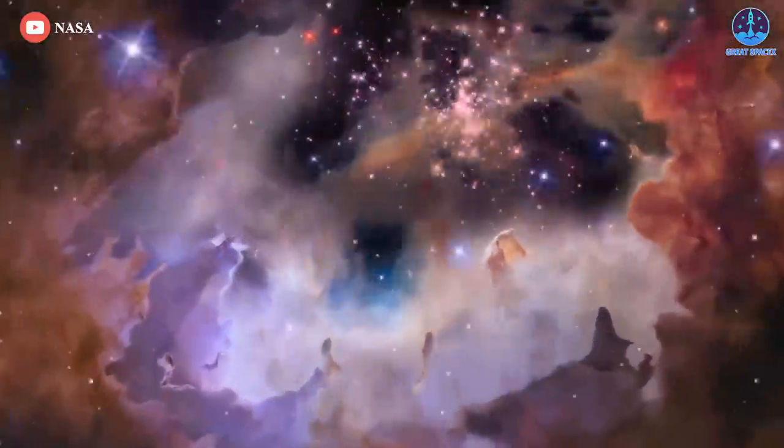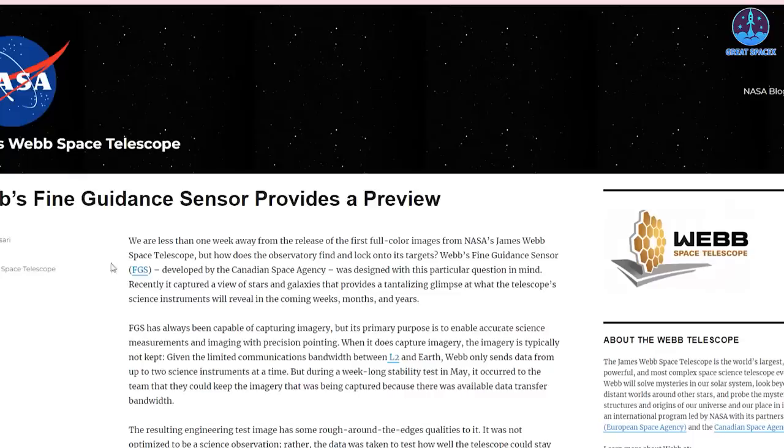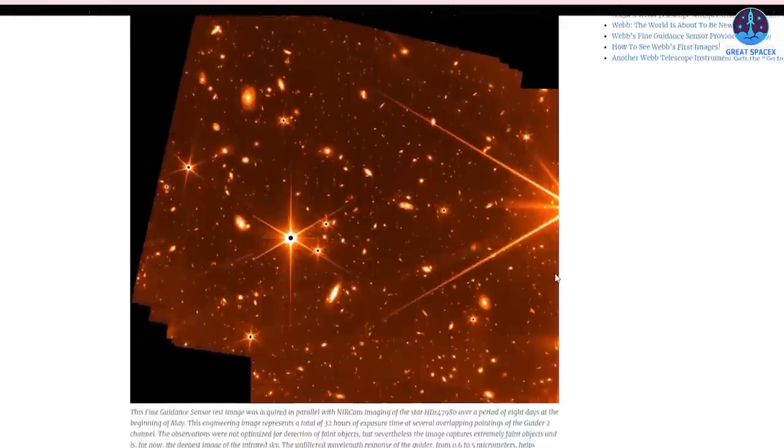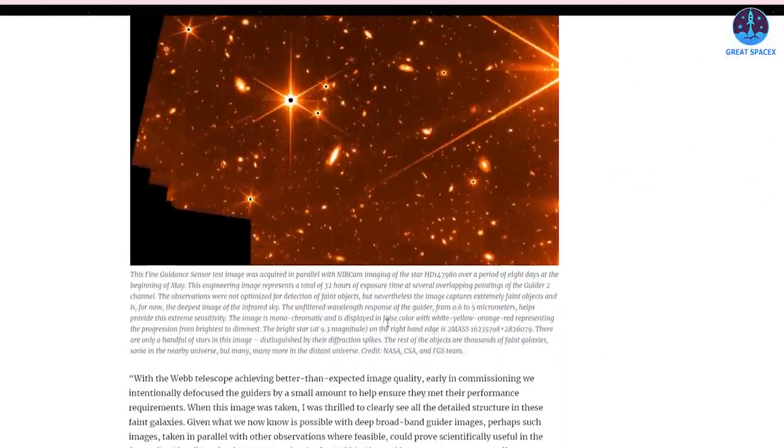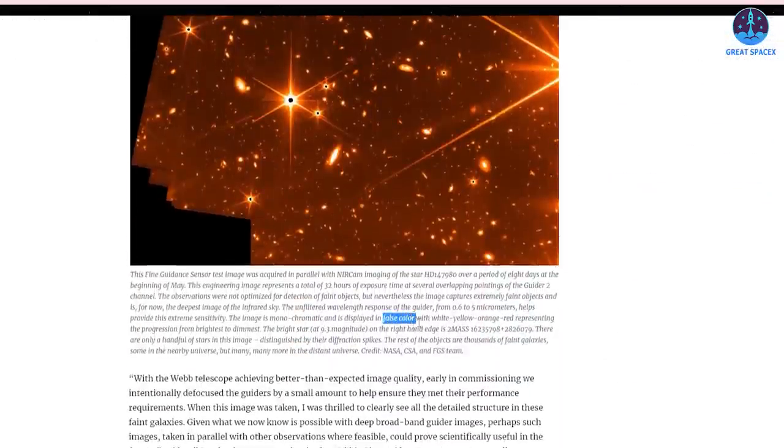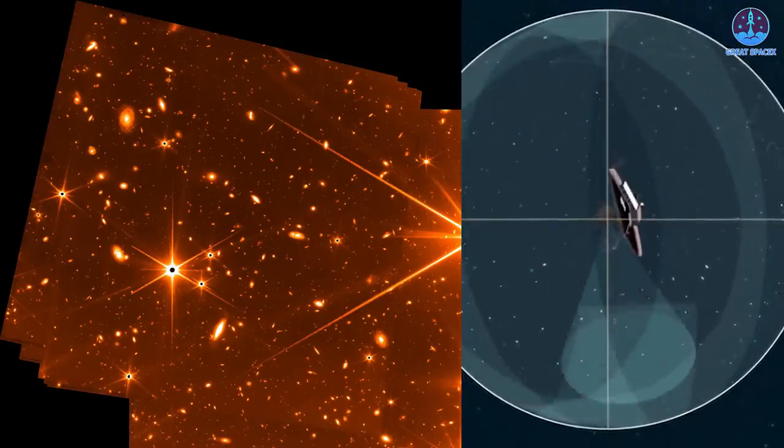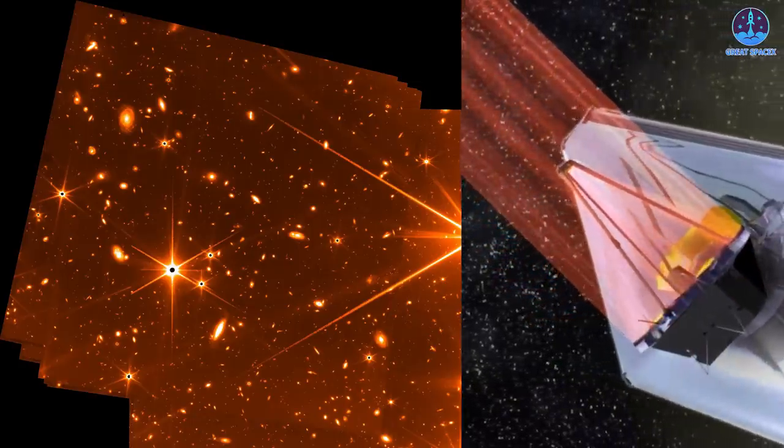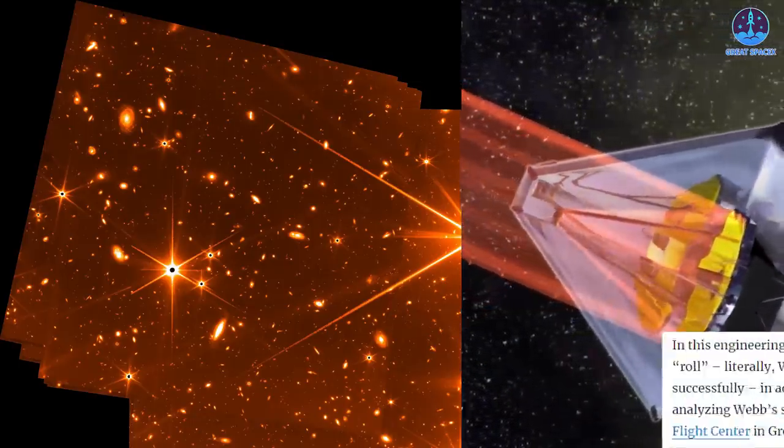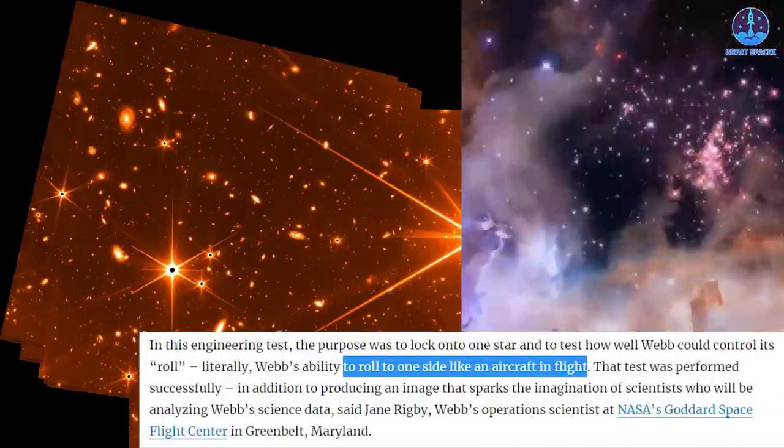FGS took the false color image during a roll test, according to a NASA statement about the image. While Webb's near-infrared camera focused on a star dubbed HD 147980, the telescope rolled from side to side like an aircraft.